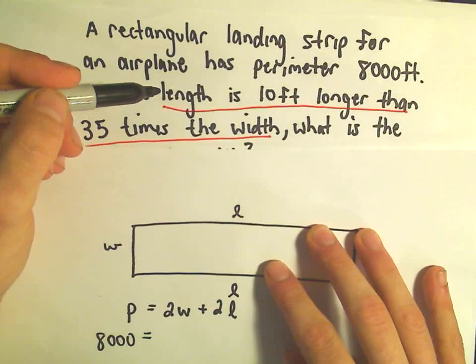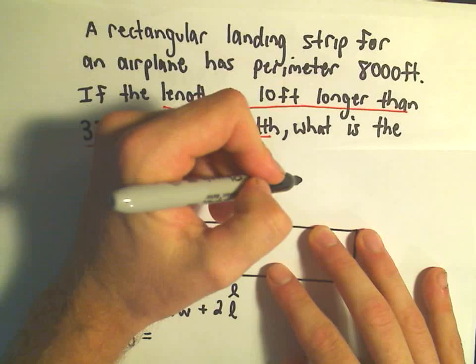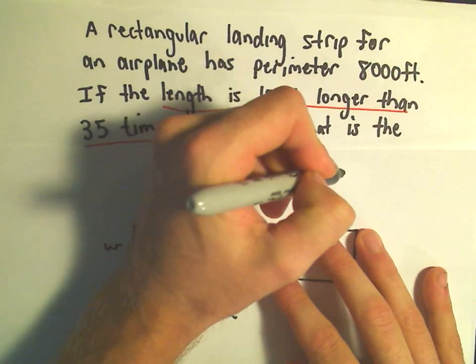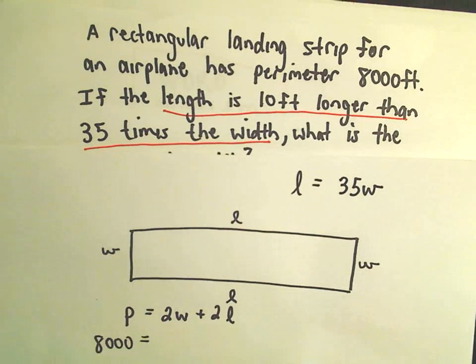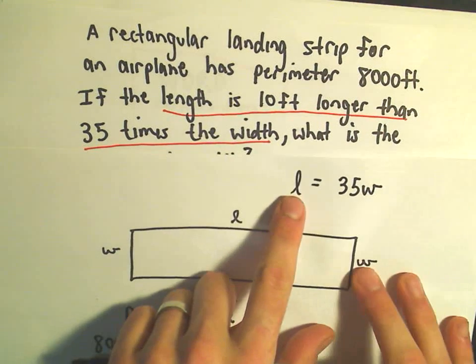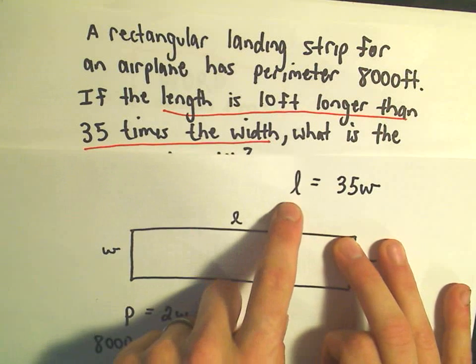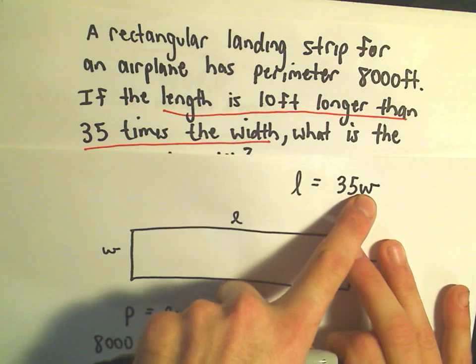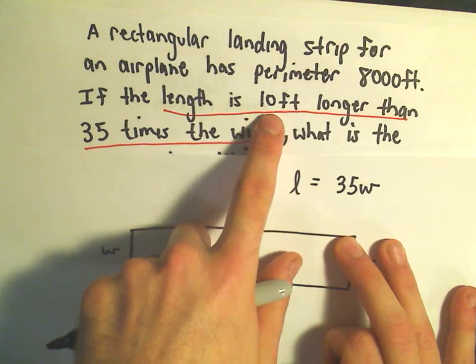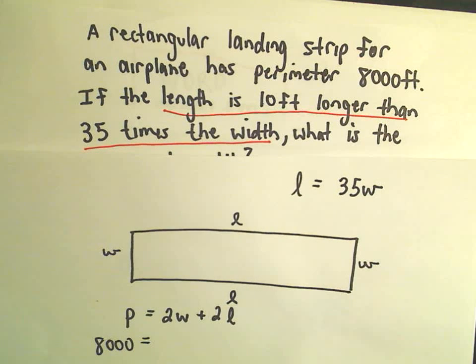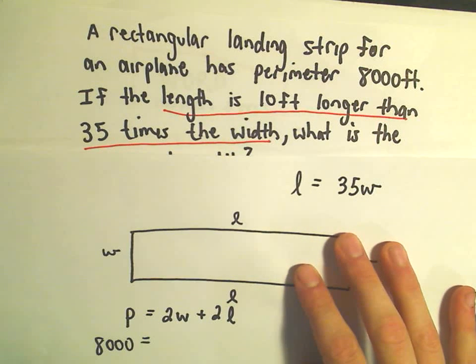So the length - the length is definitely bigger than the width. So suppose we said that the length equaled 35 times W. So this is not correct yet, but it's close to being correct. This, to me, says the length is, I always read an equal sign as the word is, the length is 35 times the width. But that's not quite right, because it's actually 10 feet longer than that. So now I think I need to put a plus 10 on one side of this equation to make it correct.